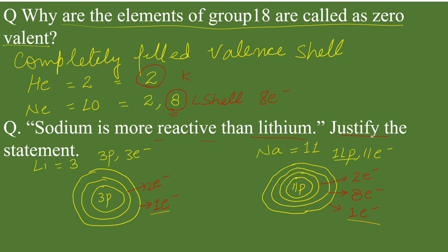But as we can see, lithium's atomic size is small in comparison to sodium because it has only 2 shells while sodium has 3 shells. Due to the larger atomic size, the valence electrons are far away from the nucleus, so sodium can easily lose this valence electron.